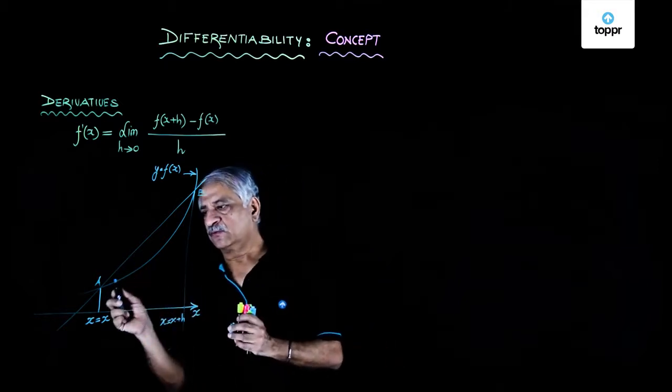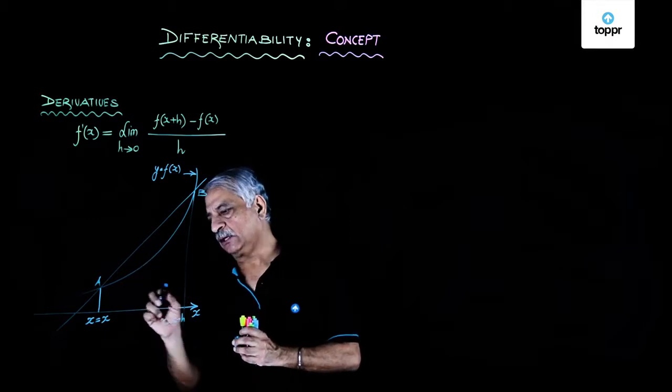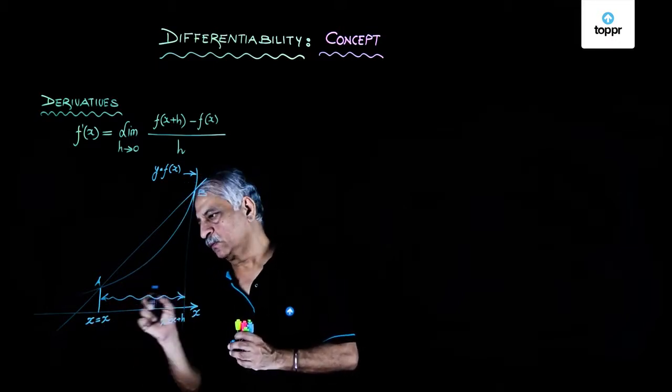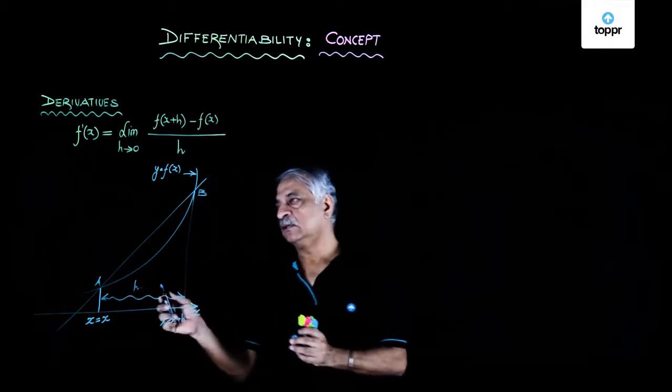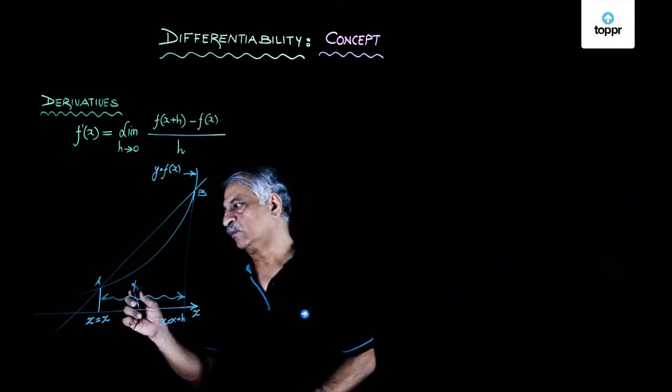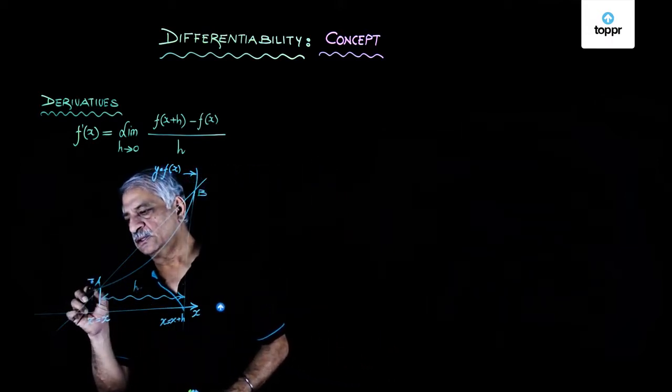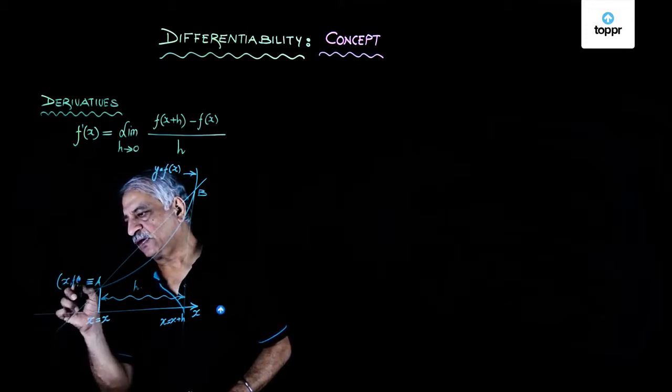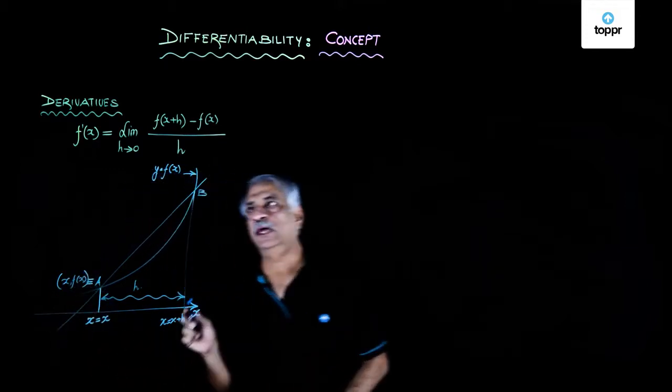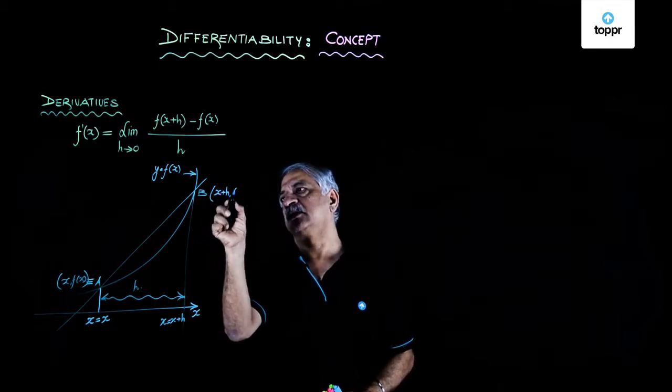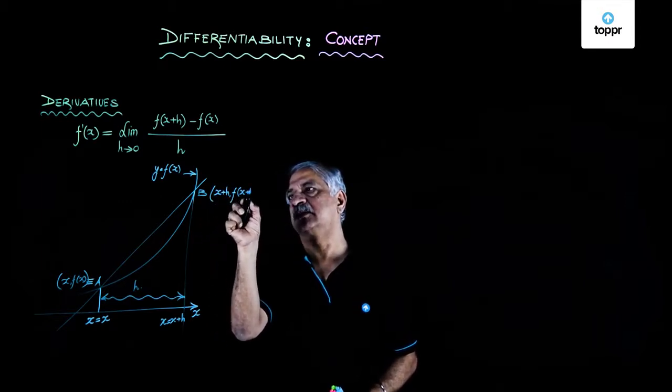For the diagram purposes, we have taken h to be so large, but in actual h is very small. So point A is (x, f(x)), and B is (x+h, f(x+h)).